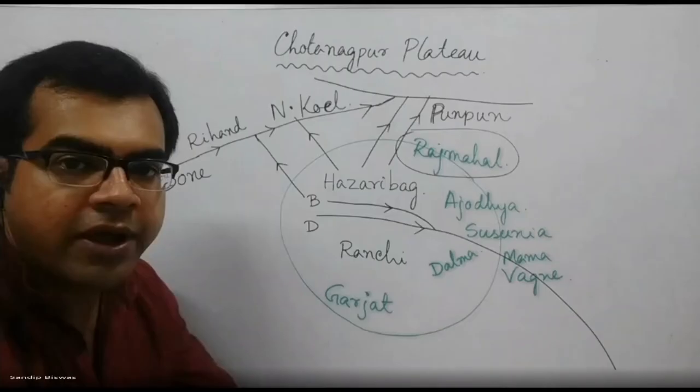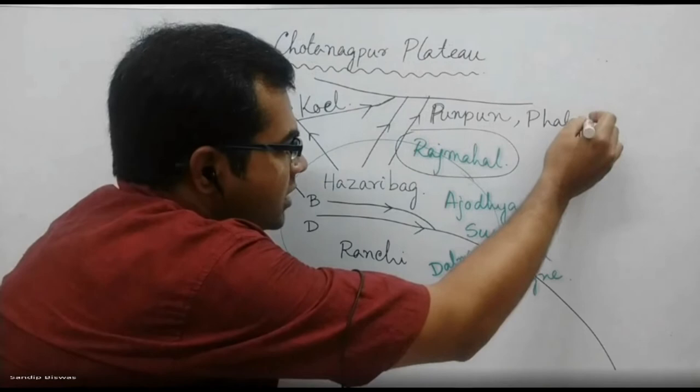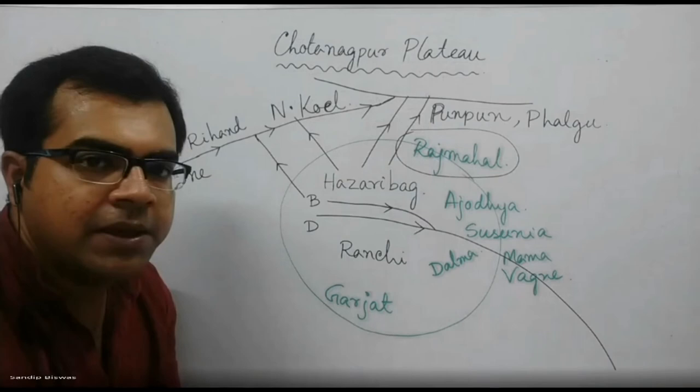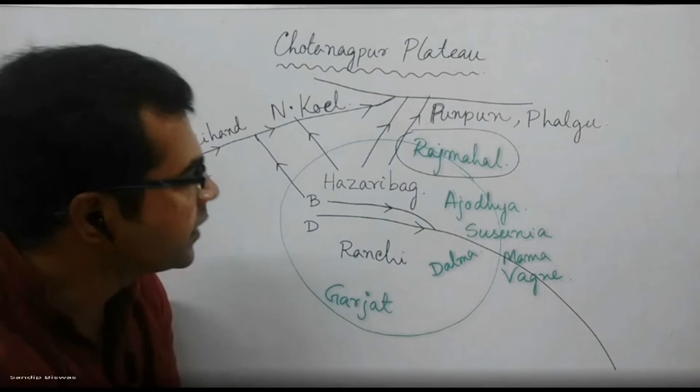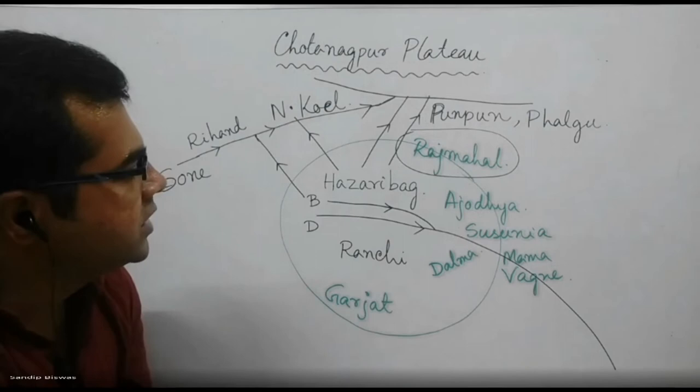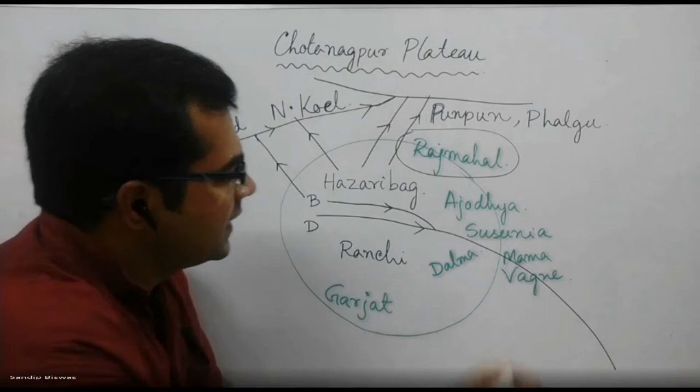Gaya — Gaya, which is Falgu River. This Pun Pun River and Falgu River — this is a Ganga tributary. The Sone River is on the northern slope, the northern direction. This is the north-west and north-west direction of the river. When we look at the east and south-east, then we look at the river.